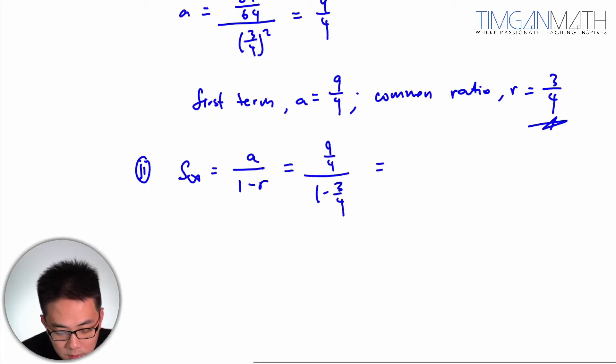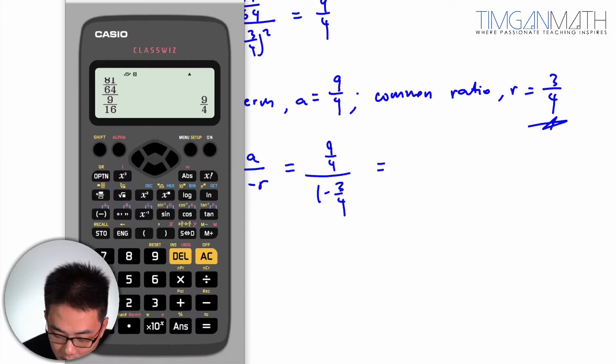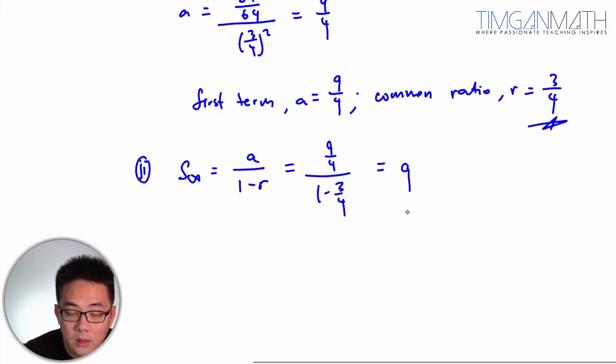Okay, so this part here would just be 9 over 4, 1 minus 3 over 4. So this would be 9. So sum to infinity is just equals to 9.